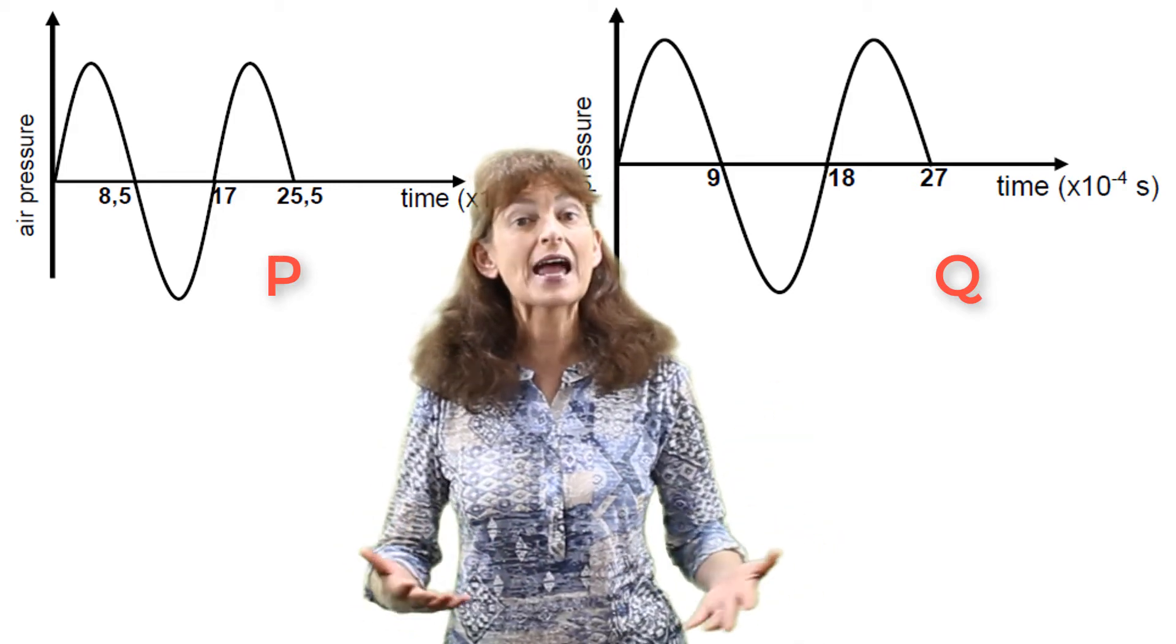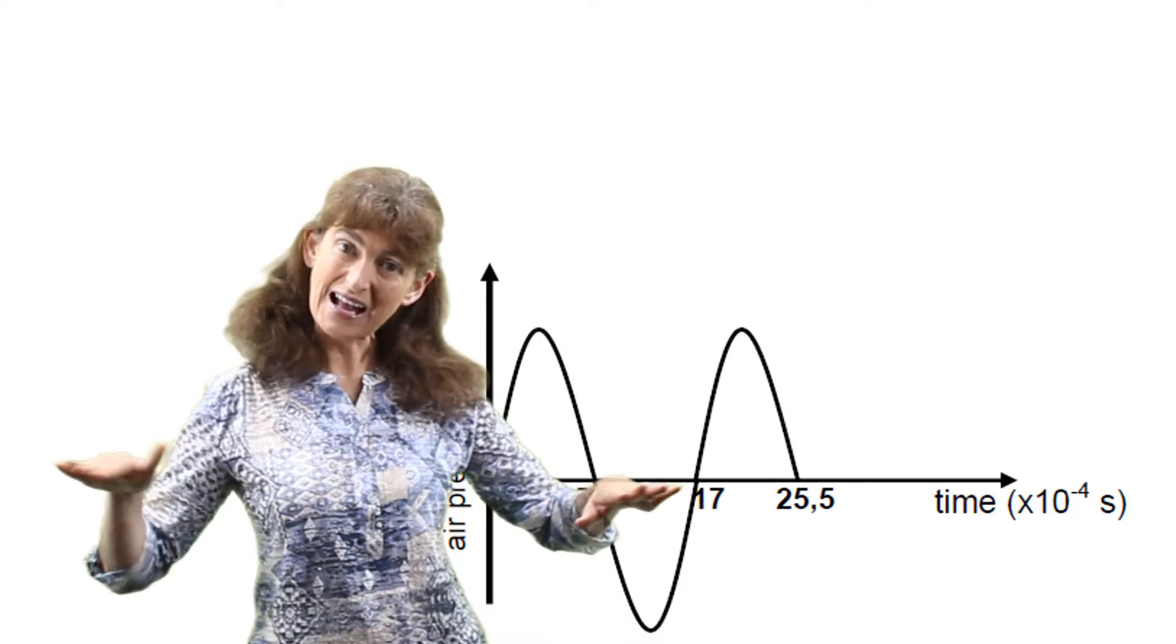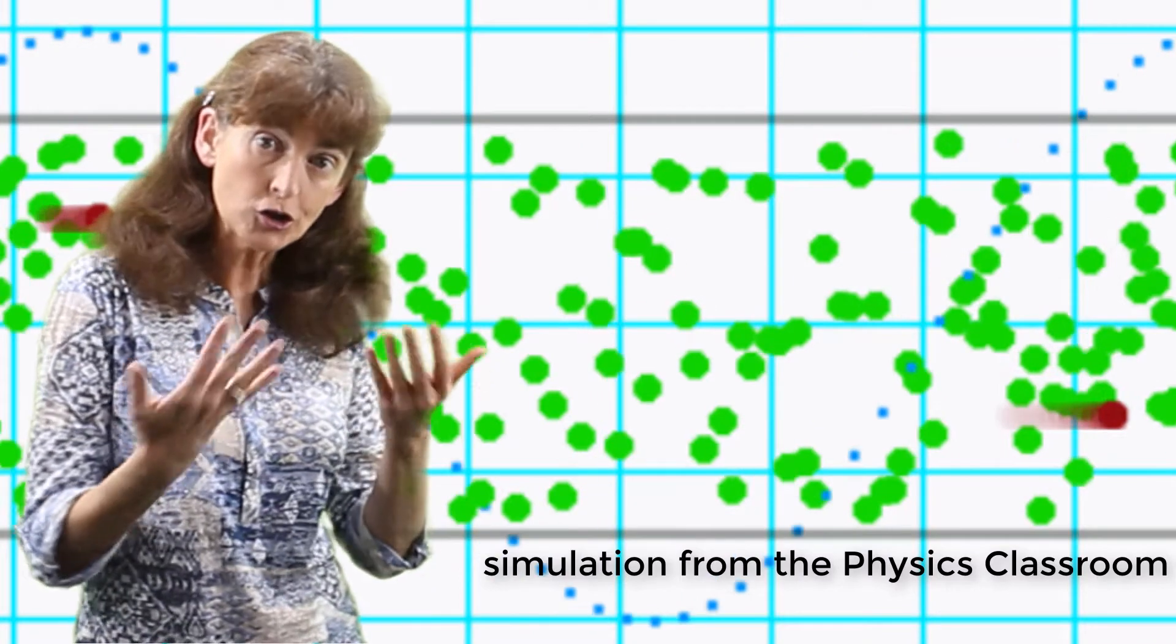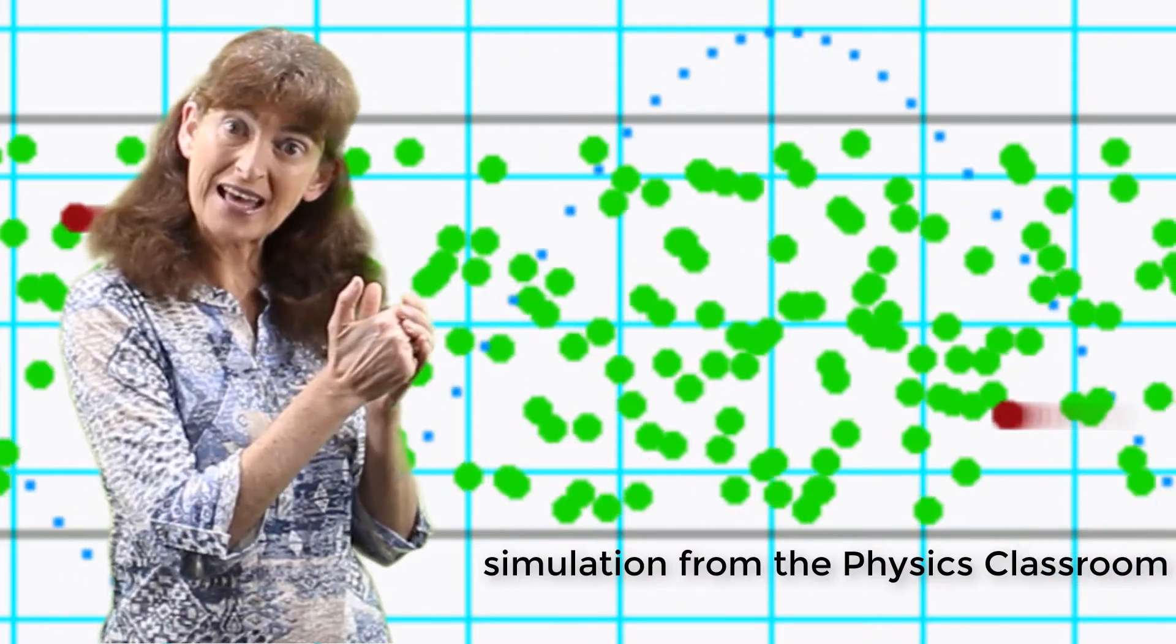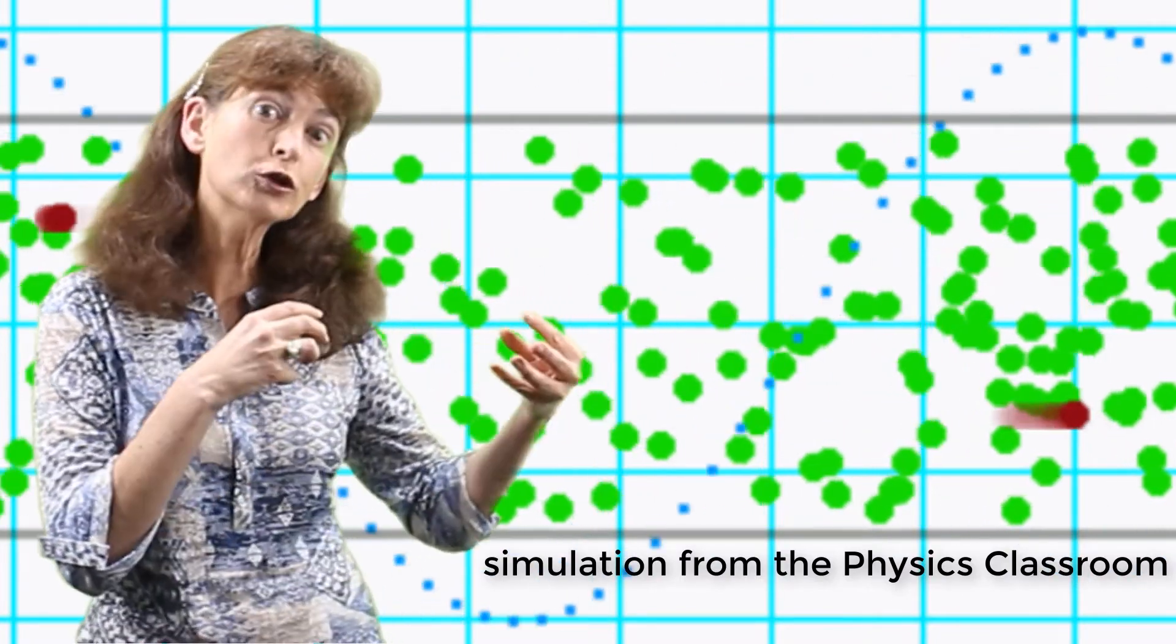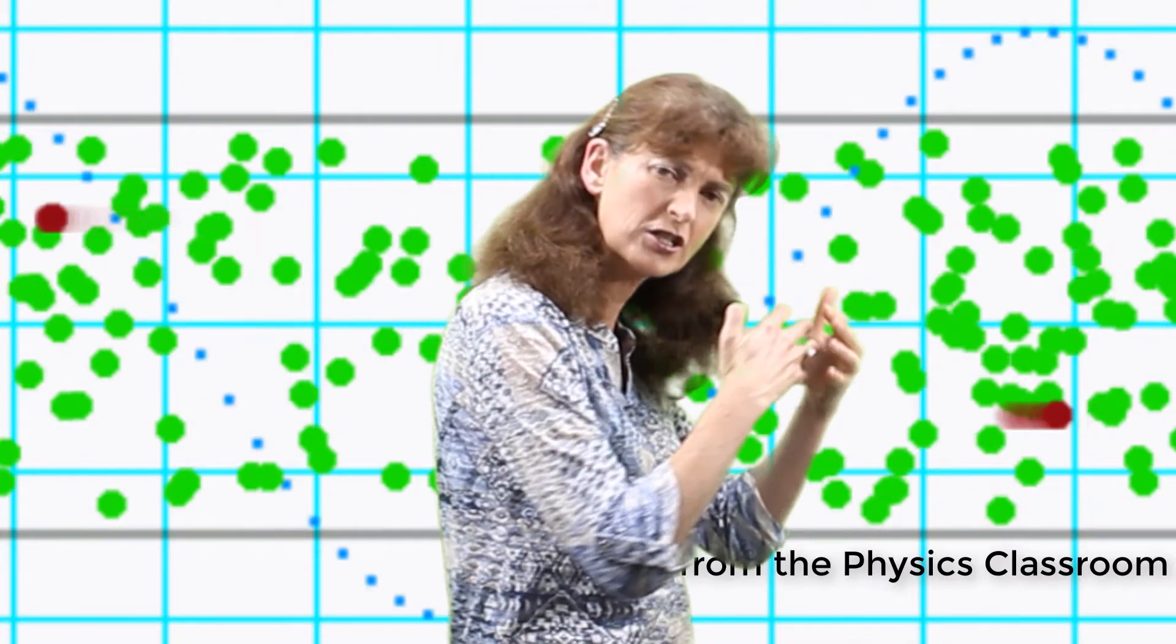We first need to understand what these graphs are telling us. The y-axis says air pressure, and the x-axis says time. During production of sound, a vibrating source pushes and pulls the air particles next to it. That creates longitudinal sound waves, which consist of parts of air that are pushed together and parts that are pulled apart - compressions and rarefactions. A sound wave is a series of compressions and rarefactions moving out from the vibrating source.